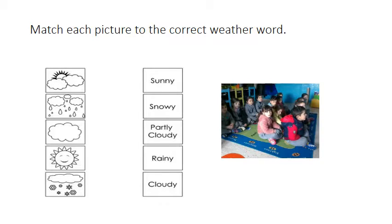I want you to look at the first exercise. Match each picture to the correct weather word. Let's read the weather words. Sunny. Sunny. Snowy. Partly cloudy. Excellent. Rainy. And cloudy.